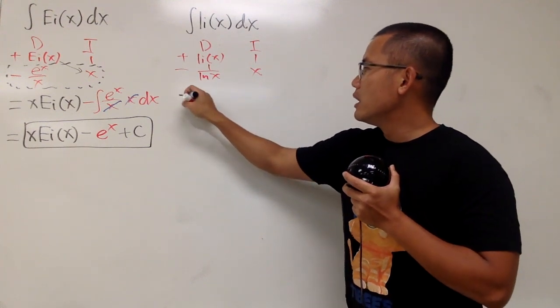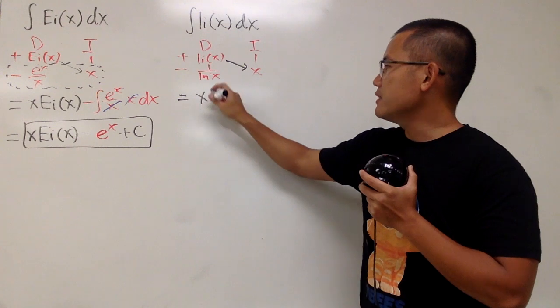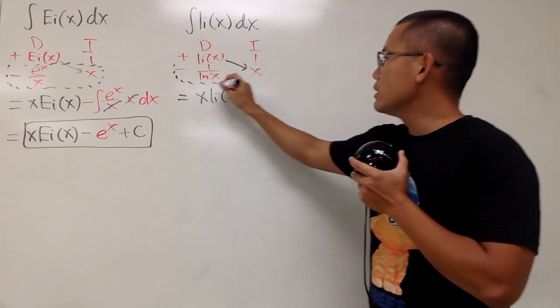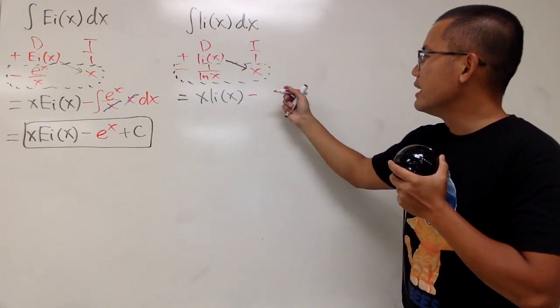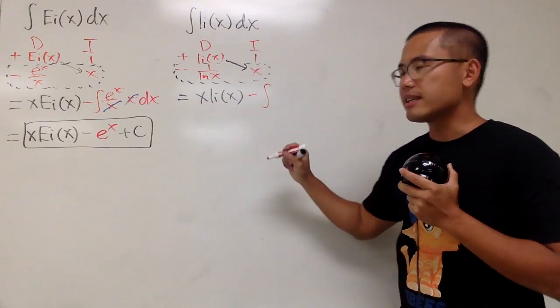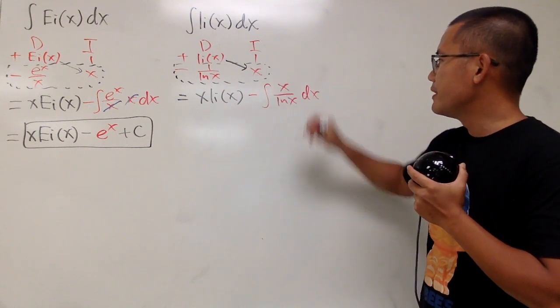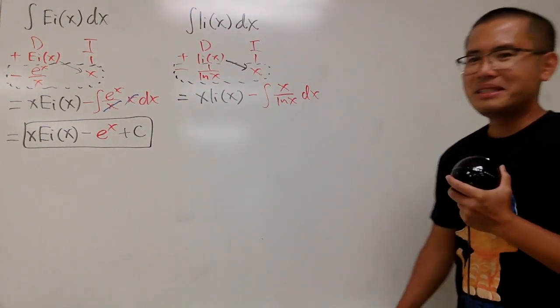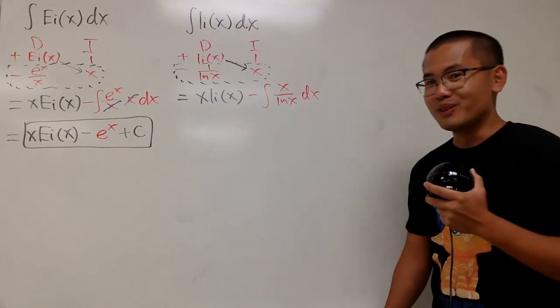Now we see, when we do this times that, so it's just x times li(x), and that's positive. And then we are going to multiply this row. Keep in mind, this is still an integral, so we have the minus integral this times that. Let's put the x on the top. So we have x over ln(x), like this, dx. This is not easy to do at the moment. Don't worry, u-sub will help us out.